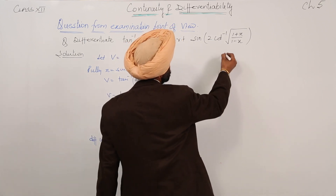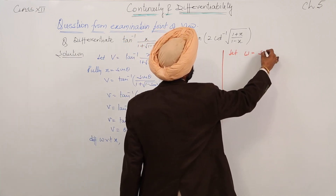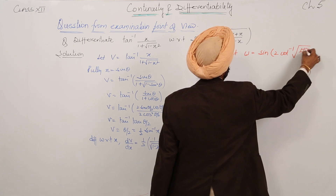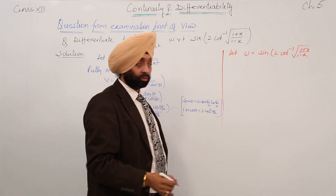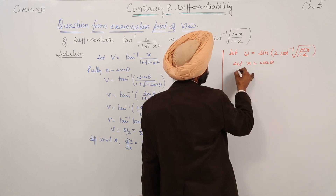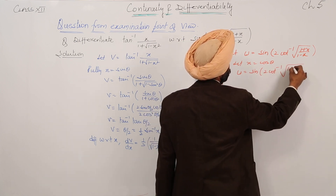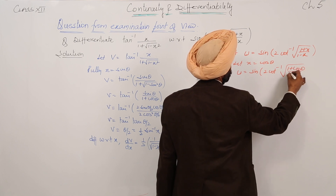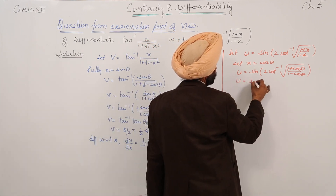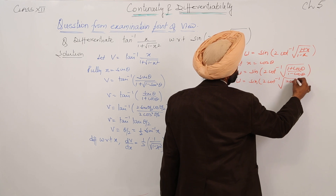Now for the second part. Let u equal to sine of [2 cot inverse of under the root of (1 plus x) upon (1 minus x)]. Now let x equal to cos theta, so we get u equal to sine of [2 cot inverse of under the root of (1 plus cos theta) upon (1 minus cos theta)].